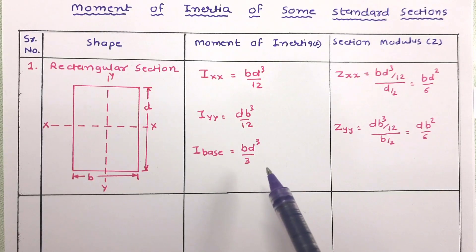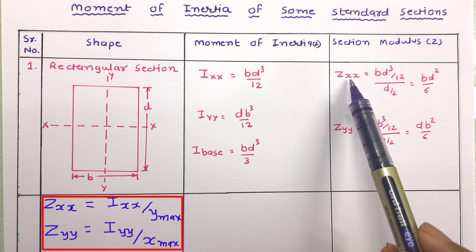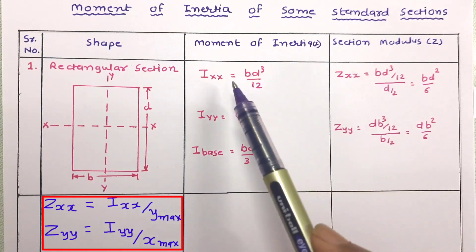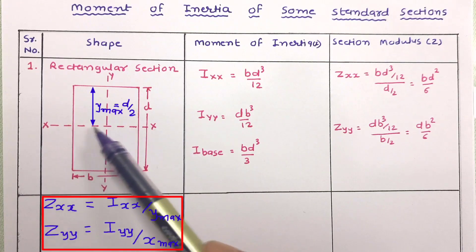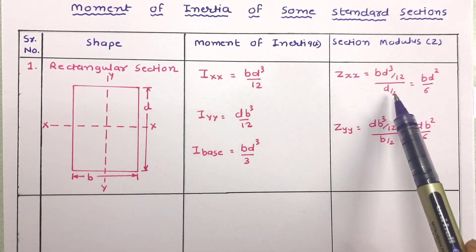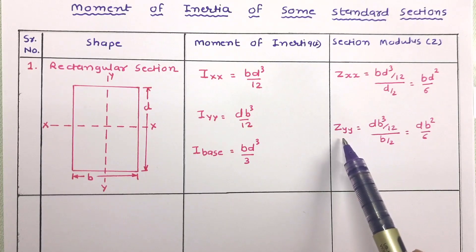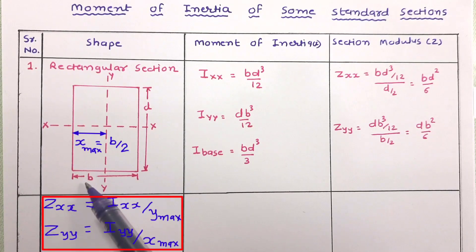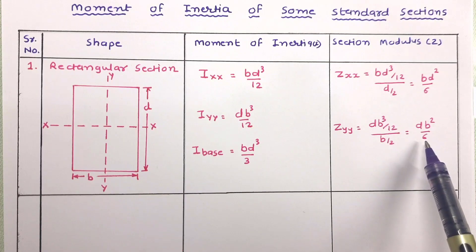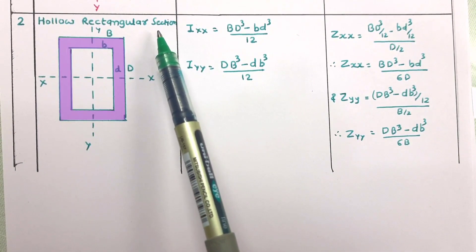The section modulus Z = I / y_max. For the rectangular section, I_xx = bd³/12 and y_max = d/2, giving Z_xx = bd²/6. Similarly, I_yy = db³/12 and x_max = b/2, giving Z_yy = db²/6. Now let us move to the hollow rectangular section.